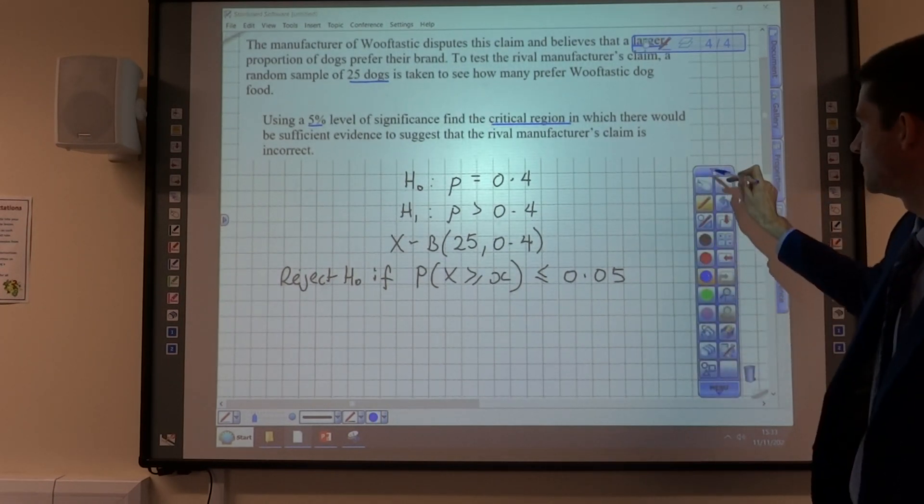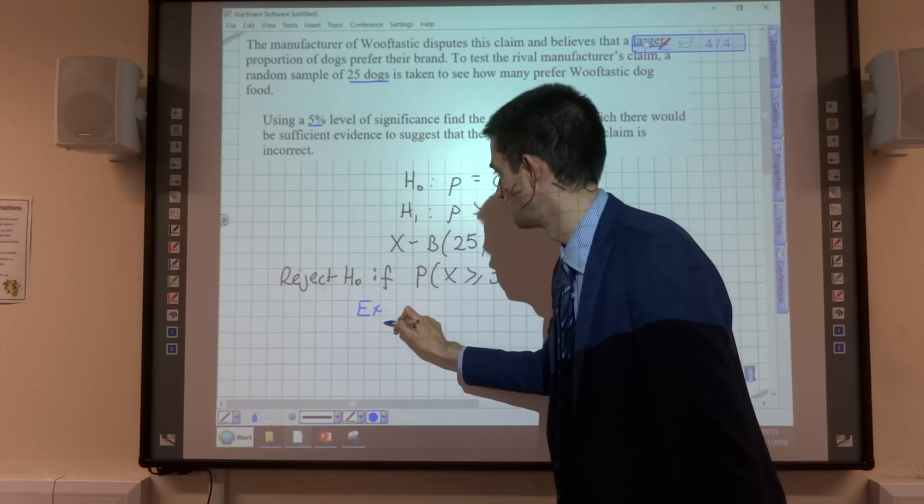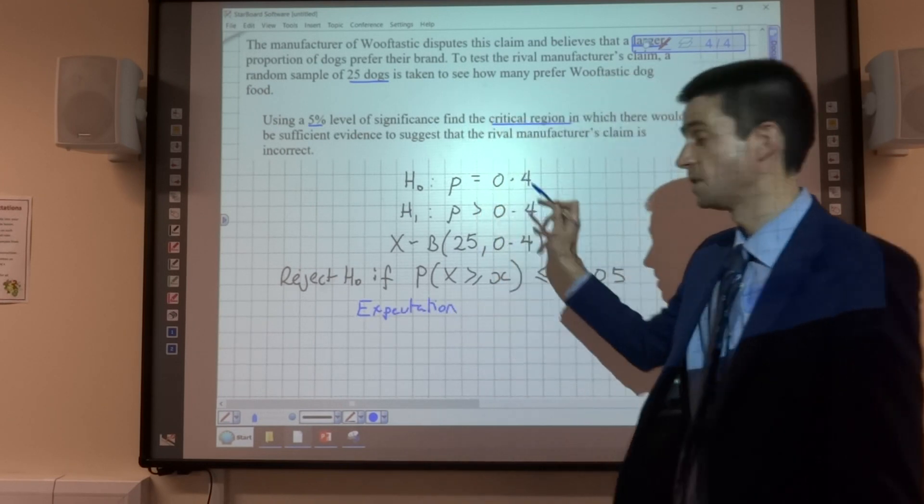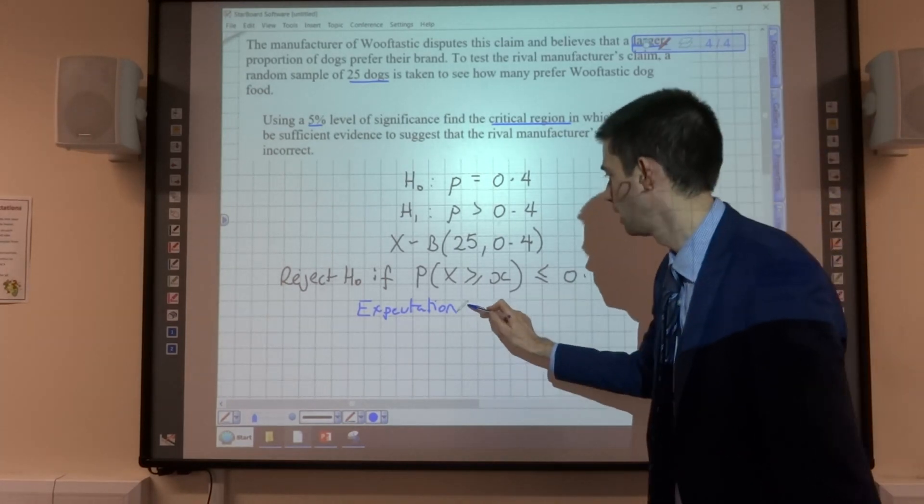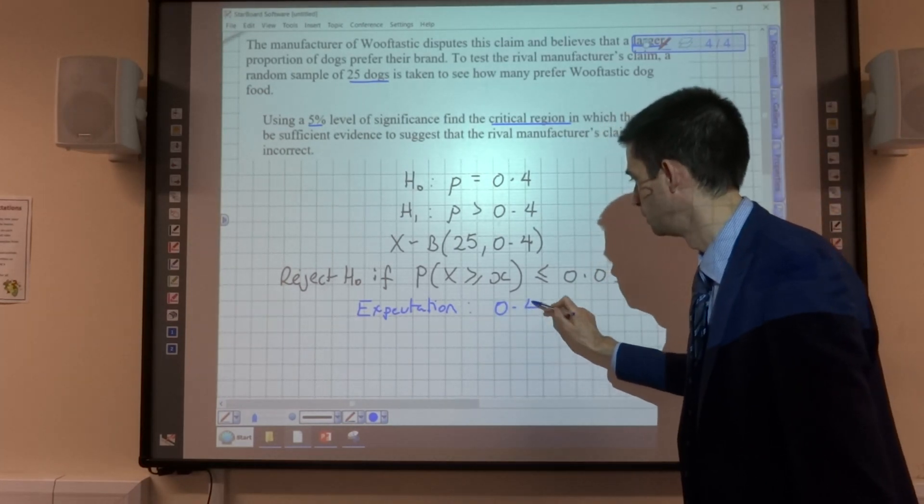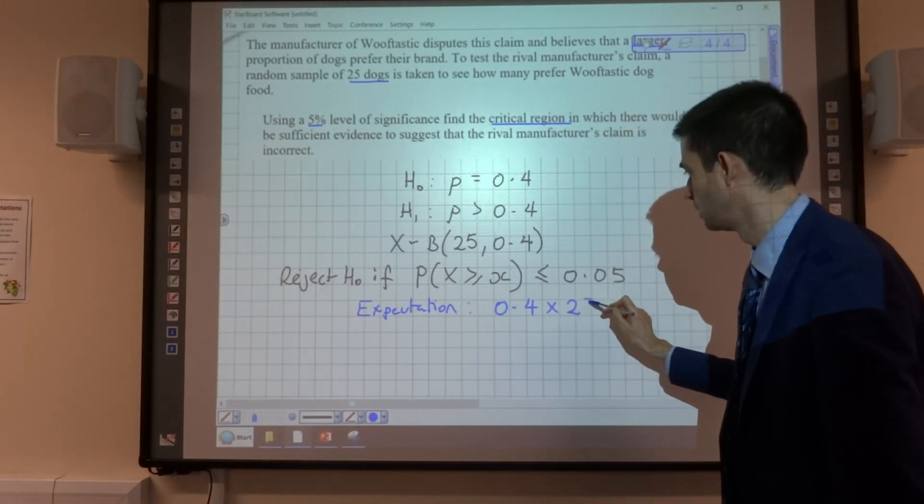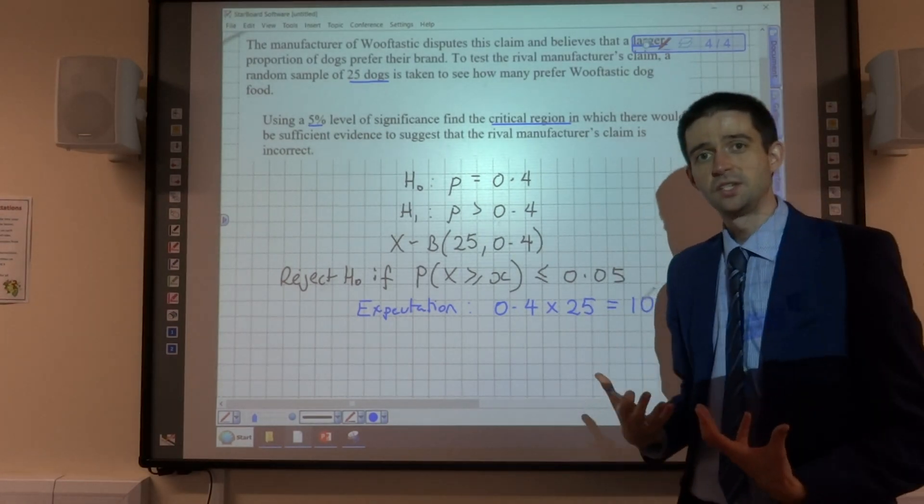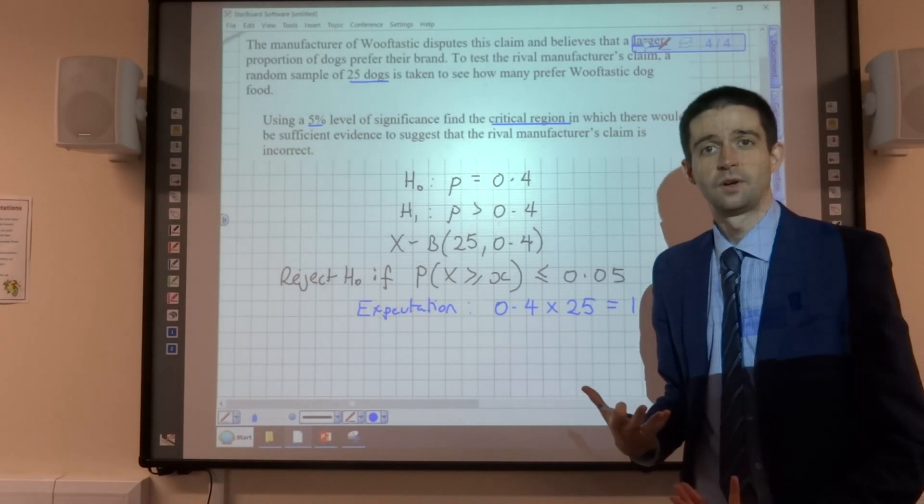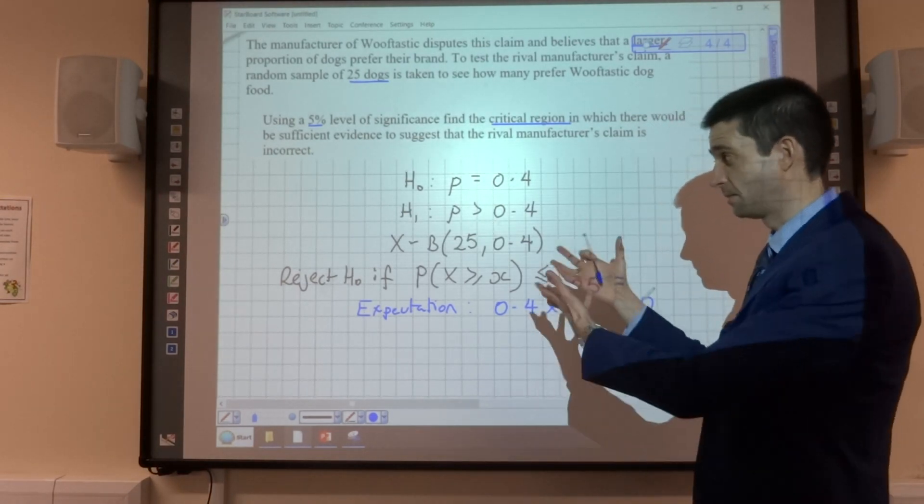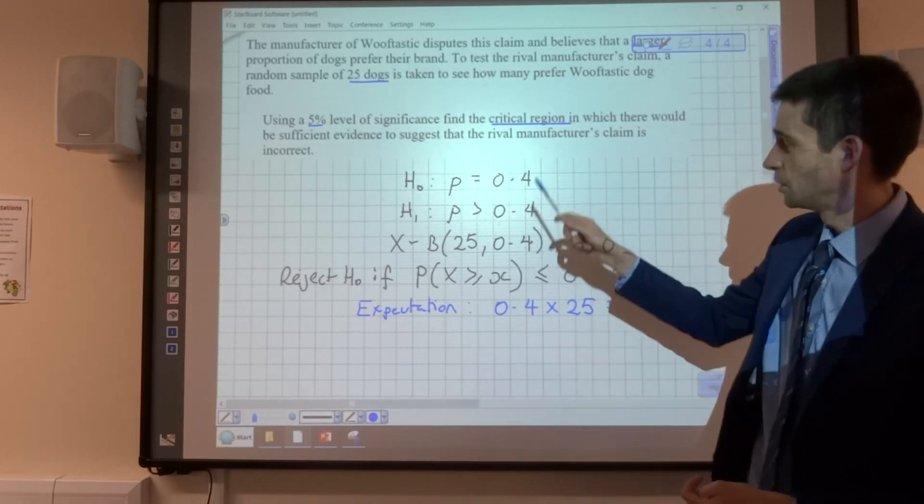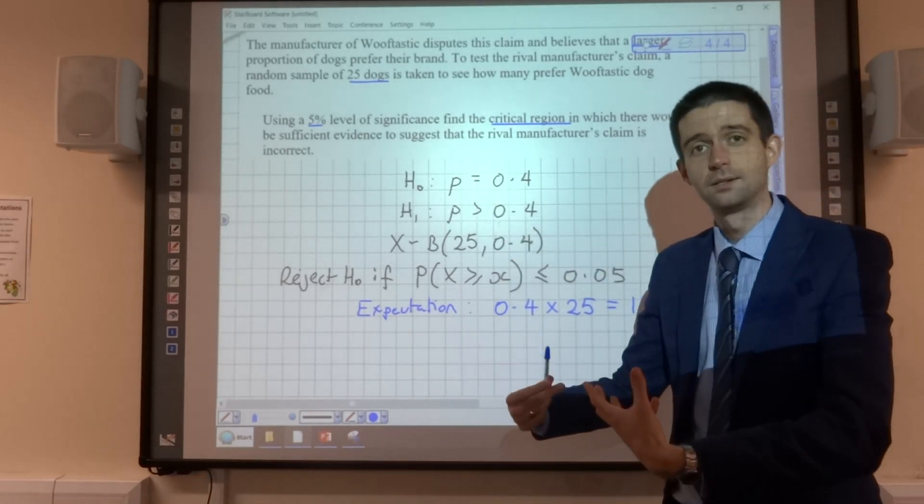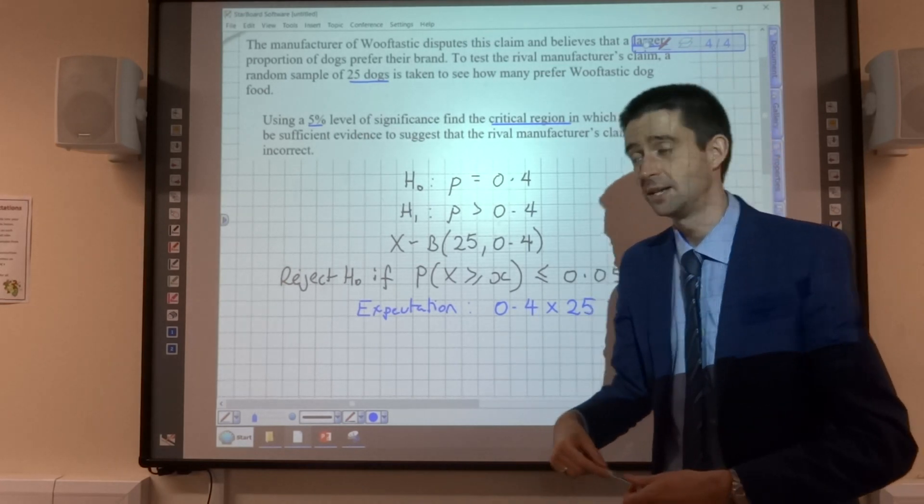Now, at this stage, it's good to get an idea of our expectation if this probability is true. So our expectation would be that 0.4 times by 25, our expectation is that 10 of the 25 dogs would prefer Woof-tastic if the 0.4 probability is true. So to be a probability of greater than 0.4, there must be more than 10 of those dogs saying they like it.